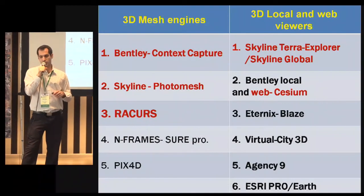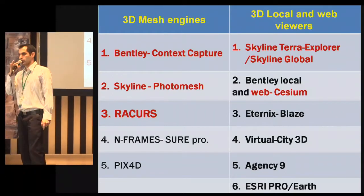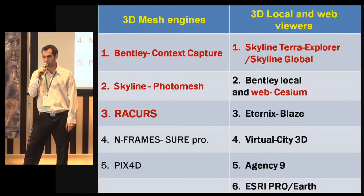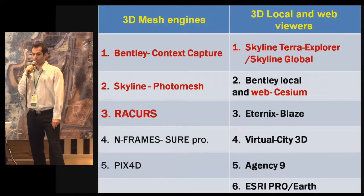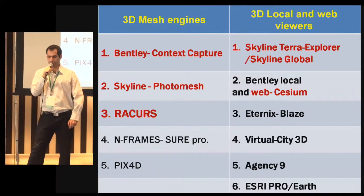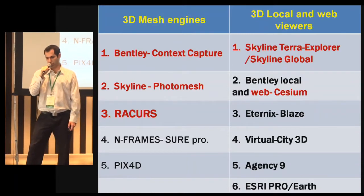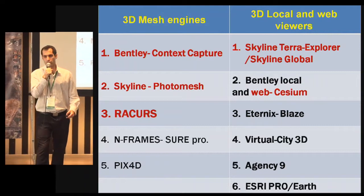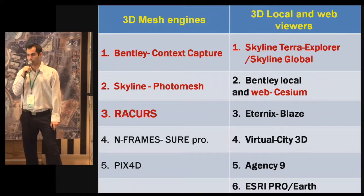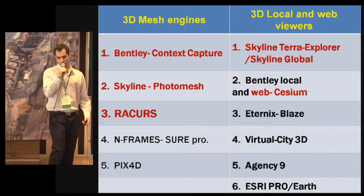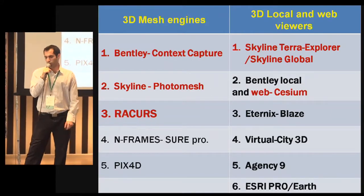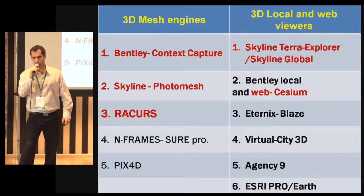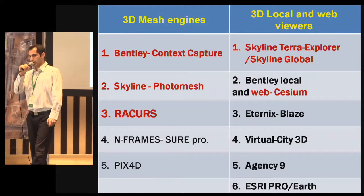The main 3D software agents we currently use: for 3D mesh engines, we use both Bentley and Skyland Photomesh. For local viewers, we have the Skyland Terra Explorer, which is one of the leading local viewers. For web viewers, there is Cesium — an open source platform everyone is now talking about — on top of which we at Simplex develop applications to distribute data to many users. Other companies working in this space include Eternix from Israel, some German companies, and firms from across Europe. Esri is also trying to catch up with the ability to present 3D data as well as the other softwares.